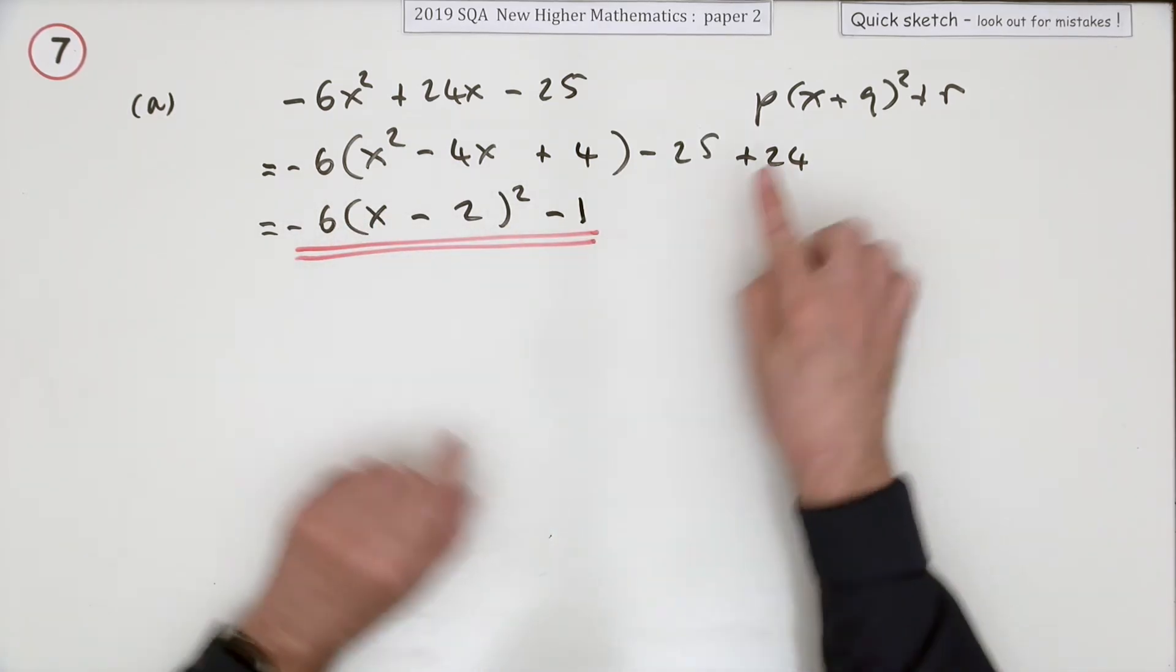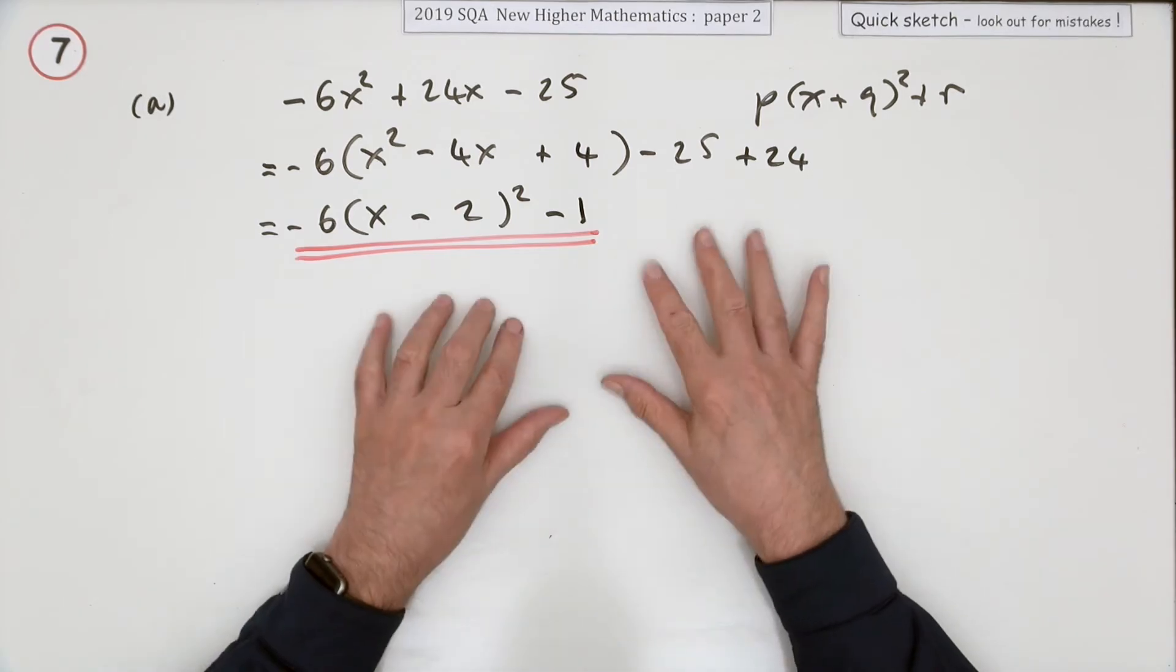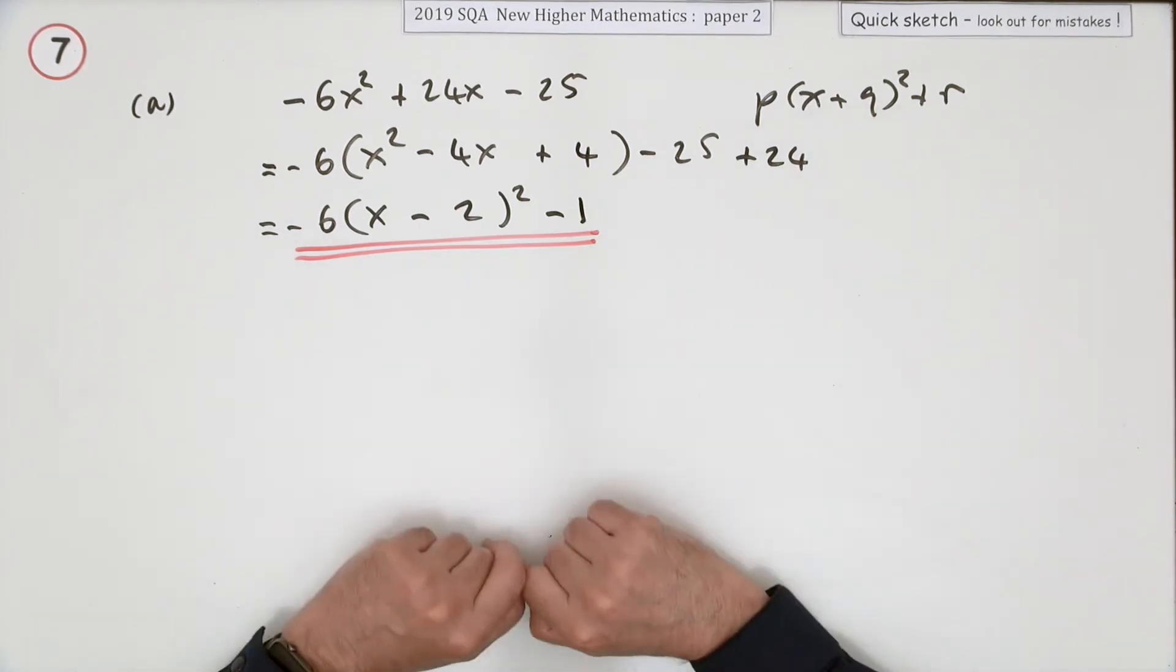It didn't say anything about stating the values of p, q, and r, so I'm not going to do that. I'll just leave it like that because it's in the required form.